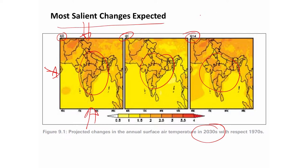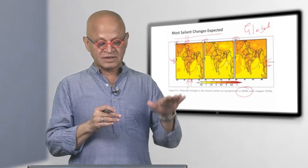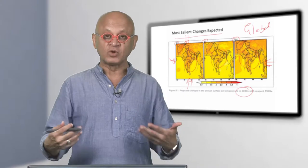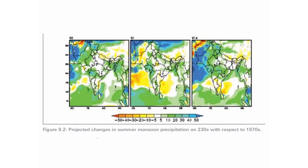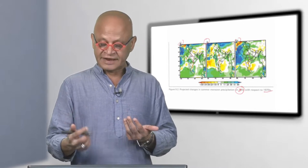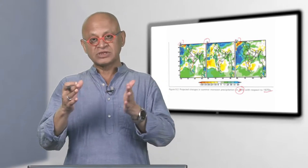There is something to remember when we do such a downscaling from global model to local: the errors in the global model are going to impact the regional model because the values are being put in at the boundaries from the surface to the troposphere and above. When you look at projections of precipitation in 2030 with respect to 1970, there is no reason to believe that these projections have better skill than the global model.